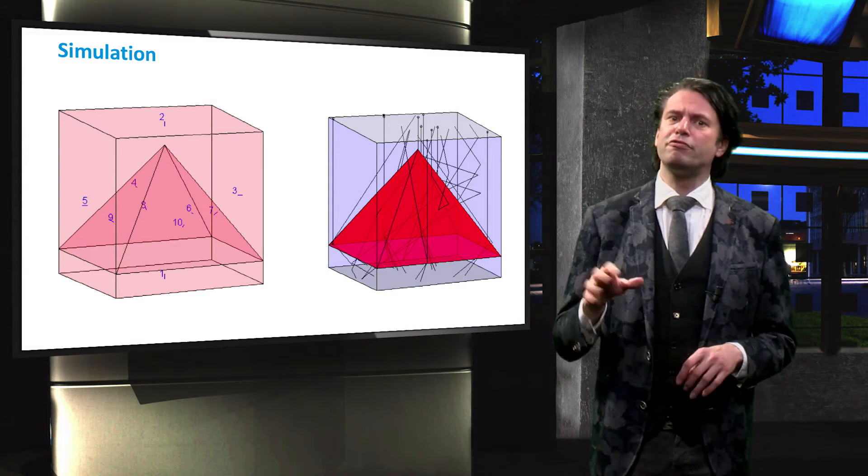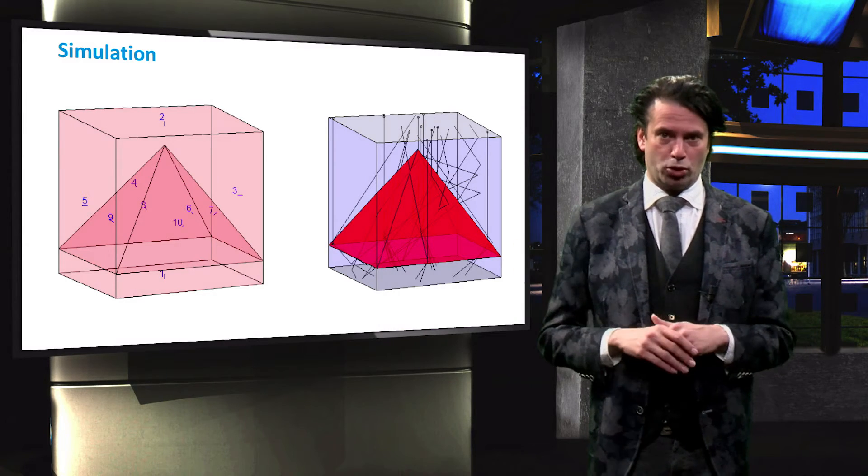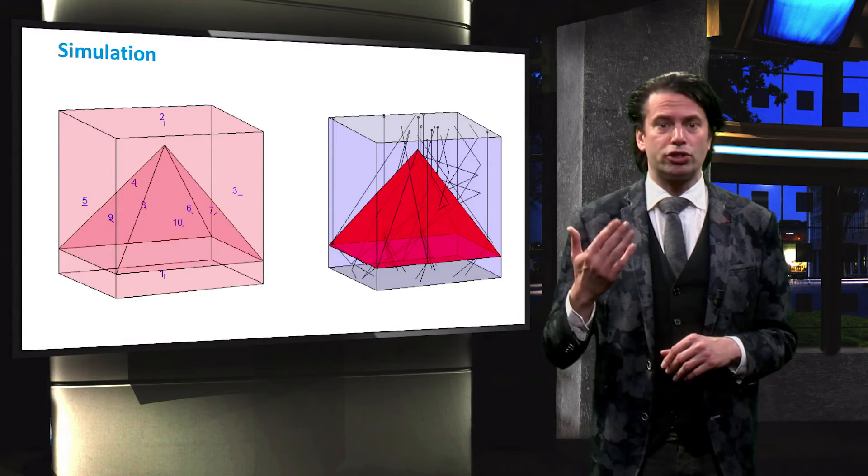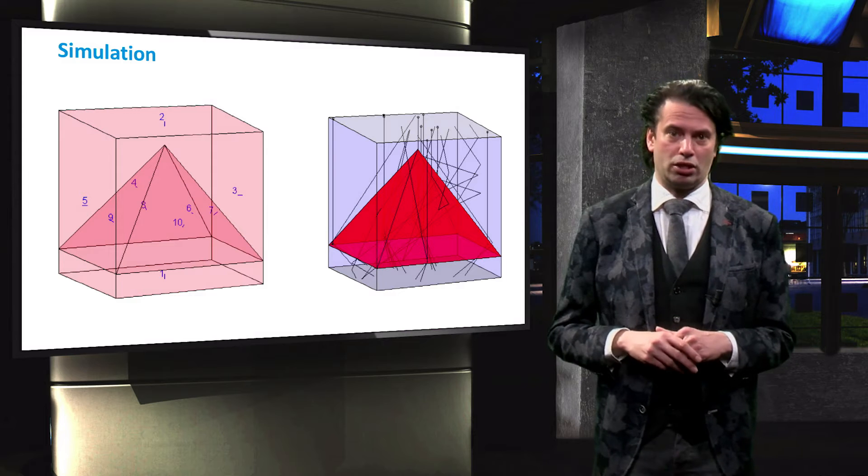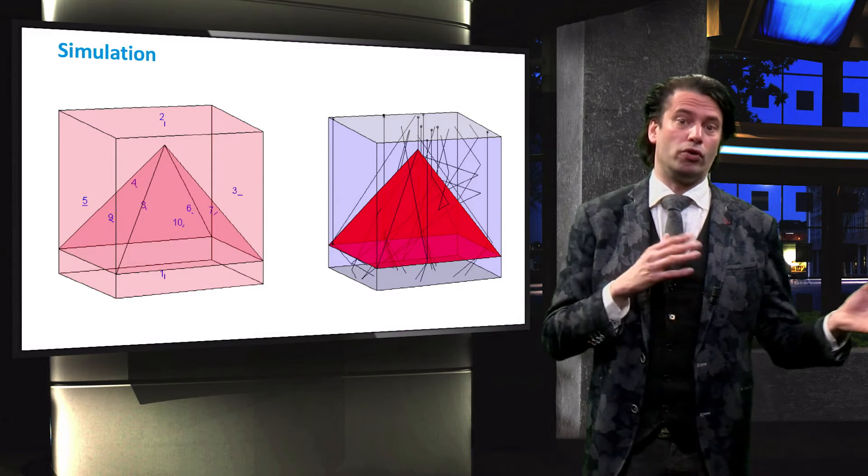This is achieved by assuming that the floor and the ceiling of this volume are perfect absorbers. Any rays absorbed by the floor counts towards the transmission into the solar cell. Any ray absorbed by the ceiling counts towards the overall reflection.